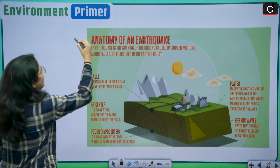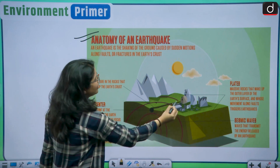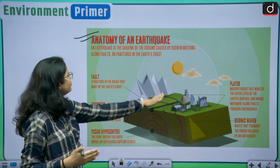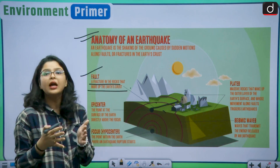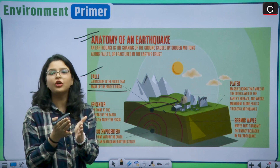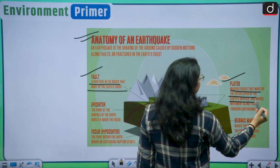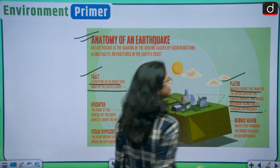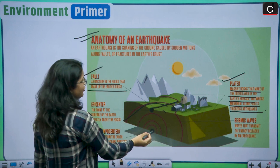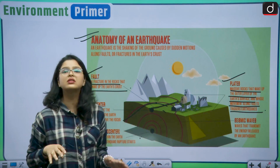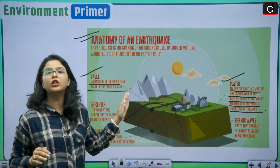This is the anatomy of an earthquake. Two plates are moving towards each other; they collide, hence causing a fault line. A fault is a fracture in the rocks that make up the earth's crust due to the colliding of the plates. The plates are massive rocks making up the outer layer of the earth's surface whose movement along faults triggers the earthquake. The seismic waves emanate from the focus, and the point just above the focus on the earth's surface is known as the epicenter.